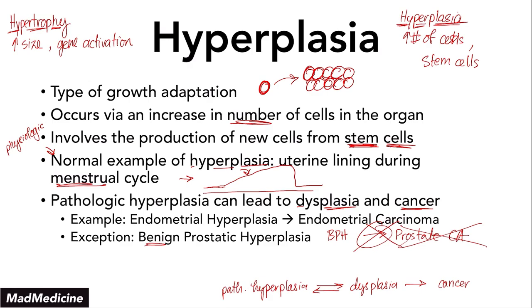All three examples are very important: a normal example of hyperplasia is the uterine lining; a pathologic example is endometrial hyperplasia leading to endometrial carcinoma in postmenopausal females; and the exception to the rule is benign prostatic hyperplasia. Earlier I told you there are two main types of growth adaptations — hypertrophy and hyperplasia — used to adapt to stressful environments.